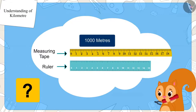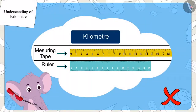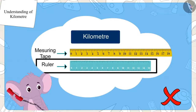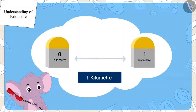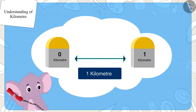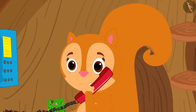You cannot measure a kilometer with a measuring tape or a ruler. Special resources are used for this. You can only find the distance between two places by the distances written on the signs on the road. Chanda said that tomorrow when they go for the trip, she will look at these signs carefully.